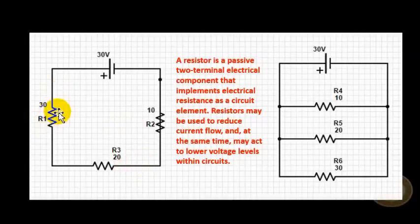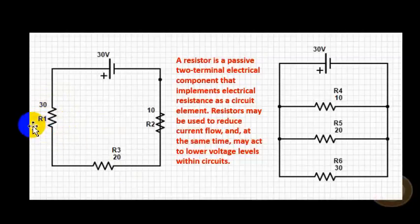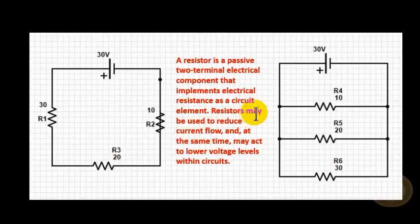Tonight the new symbol we're going to talk about is a resistor. According to Wikipedia, a resistor is a passive two-terminal electric component that implements electrical resistance as a circuit element. So it causes resistance.